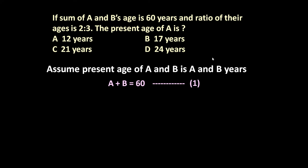So this is equation number 1. And ratio of their ages, it means A upon B equals 2 by 3 because ratio of their ages is 2 to 3. Again, simplify it, you will get 2B equals 3A, this is equation number 2.